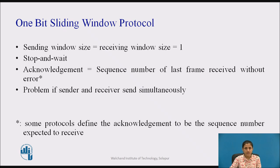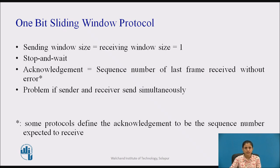The next frame to send and frame expected can be either 0 or 1. The acknowledgement field contains the number of the last frame received without error. The protocol uses independent acknowledgement for each frame received. The protocol discards out-of-order frames.